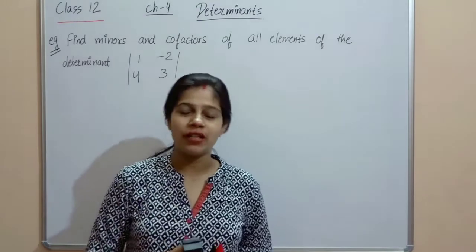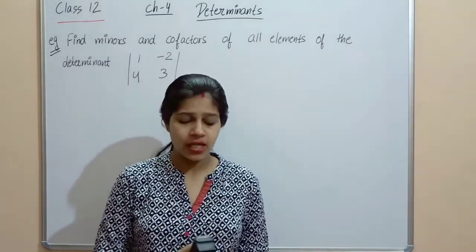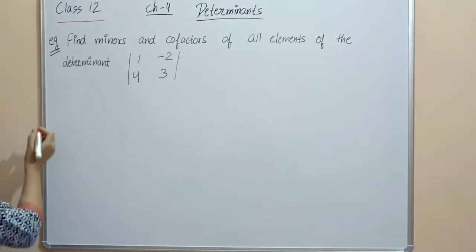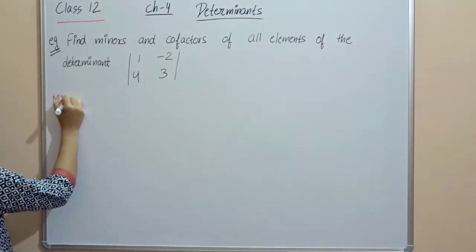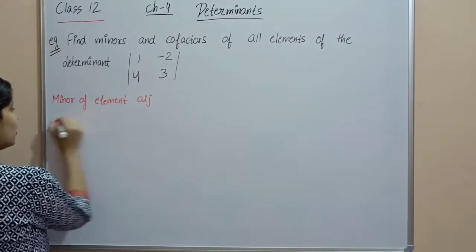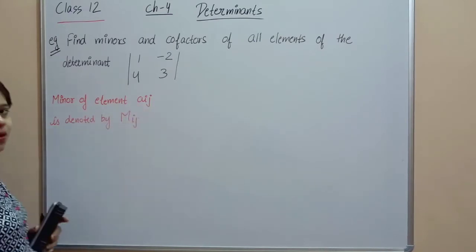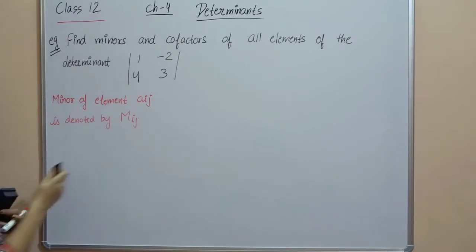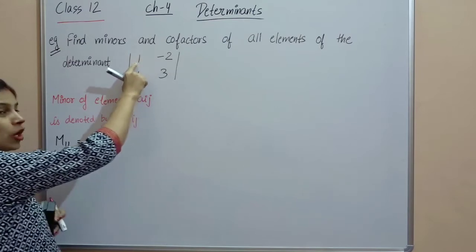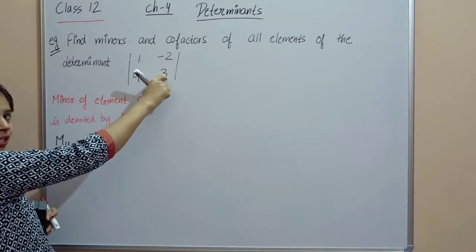Example: find the minors and co-factors of all elements of a 2×2 determinant. We'll first find all minors. Minor of element Aij is denoted by capital Mij. Let's find M11 first. M11 means delete the first row and first column; the remaining element is 3, so M11 = 3. M21 means delete the second row and first column; the remaining element is −2, so M21 = −2.